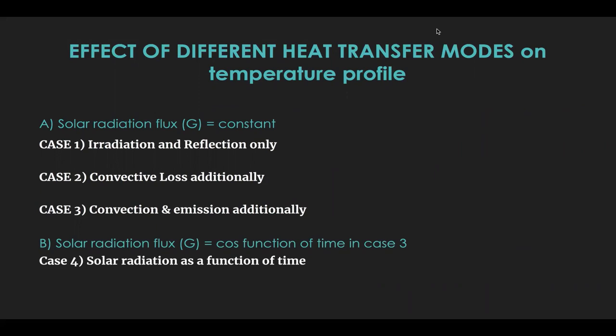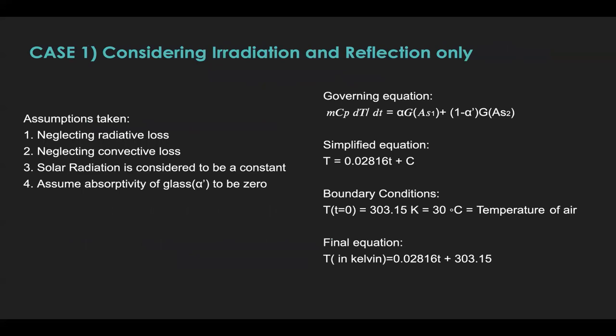We shall look at the effect of different heat transfer modes on temperature profile. We had considered the car cabin as our control volume. Now, moving on to case 1. We consider only the irradiation and reflection. Assumptions taken are that there is no loss terms by radiation and convection. The G is taken to be constant and the absorptivity of glass surface is 0. The governing equation that has to be solved is just an energy balance on the control volume of the car.